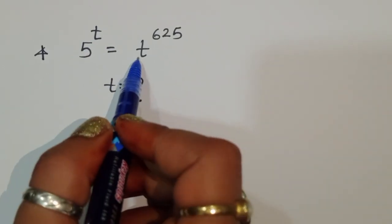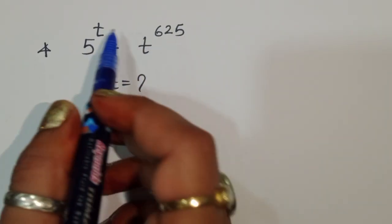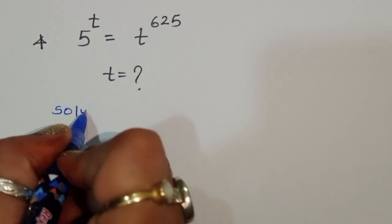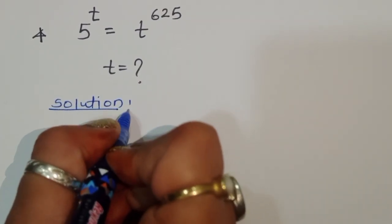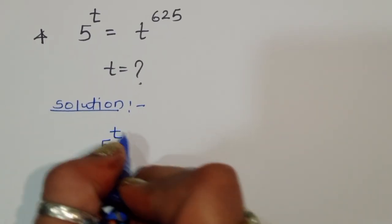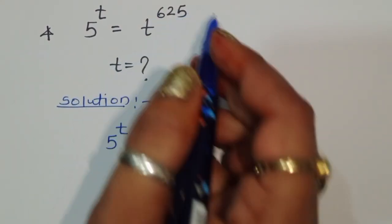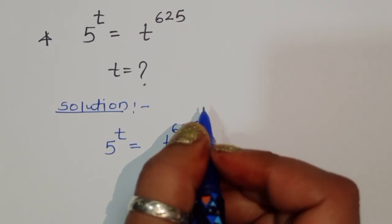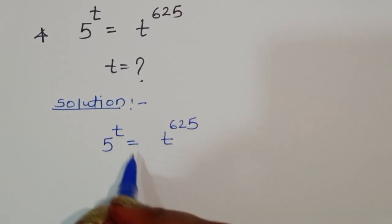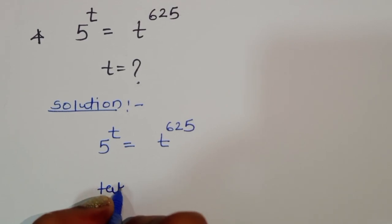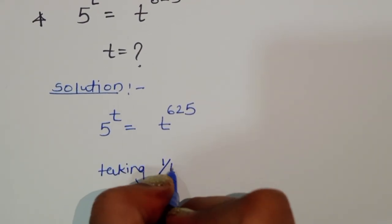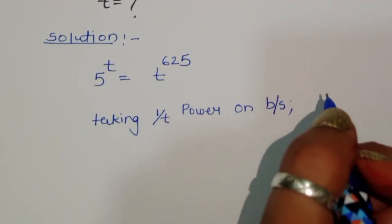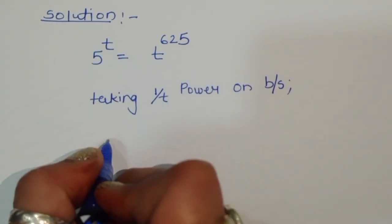5 power t is equal to t power 625, so we have to find out the value of t. Let's see the solution. Taking 1 upon t power on both sides.